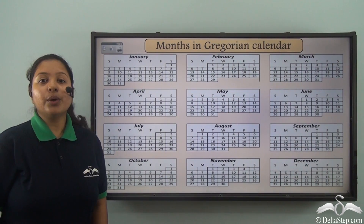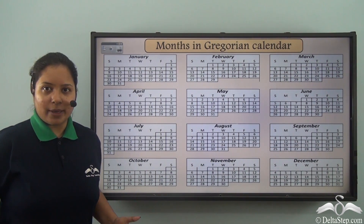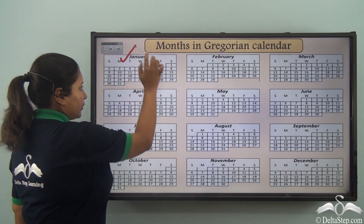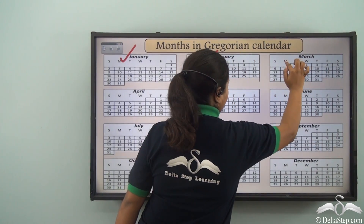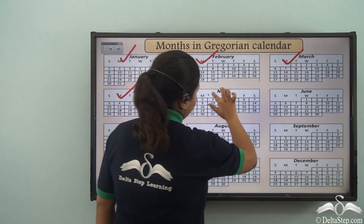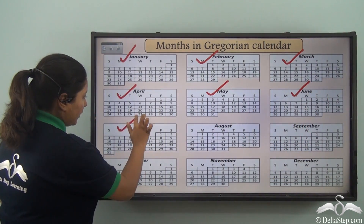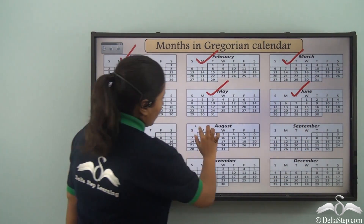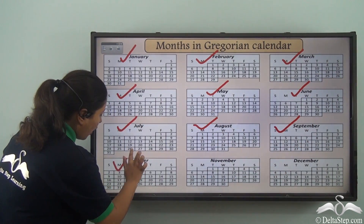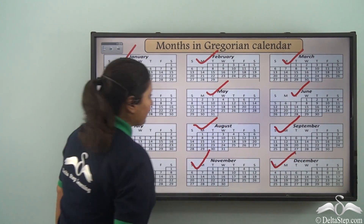The Gregorian calendar has got 12 months. What are they? They are January, February, March, April, May, June, July, August, September, October, November and December.